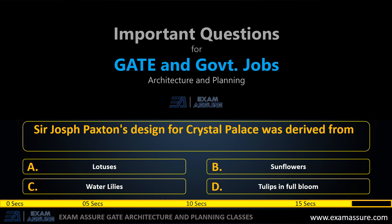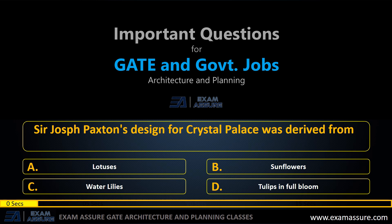Next question: Sir Joseph Paxton's design for the Crystal Palace was derived from — option A: lotuses, option B: sunflowers, option C: water lilies, option D: tulips in full bloom. The correct answer is water lilies.